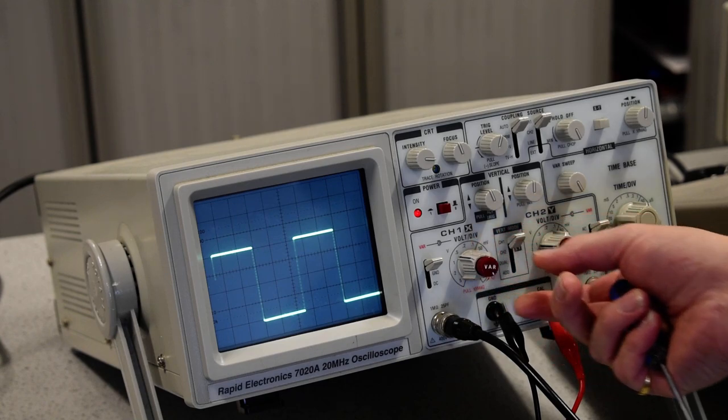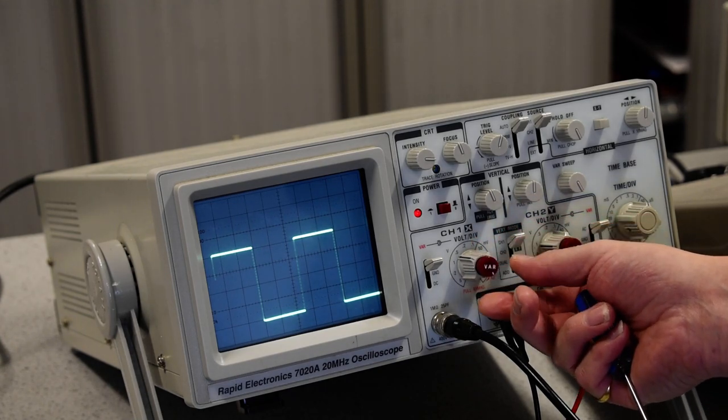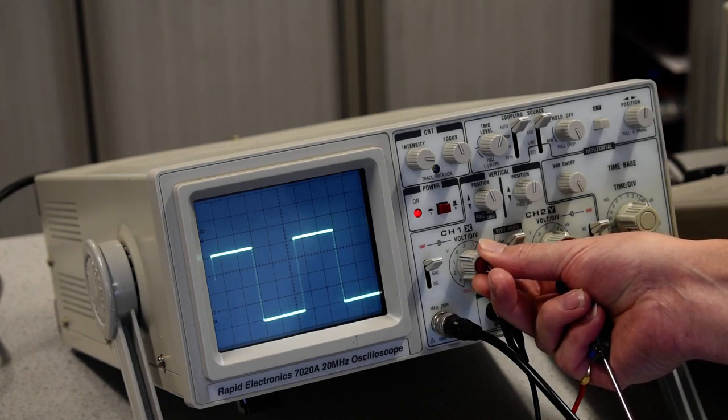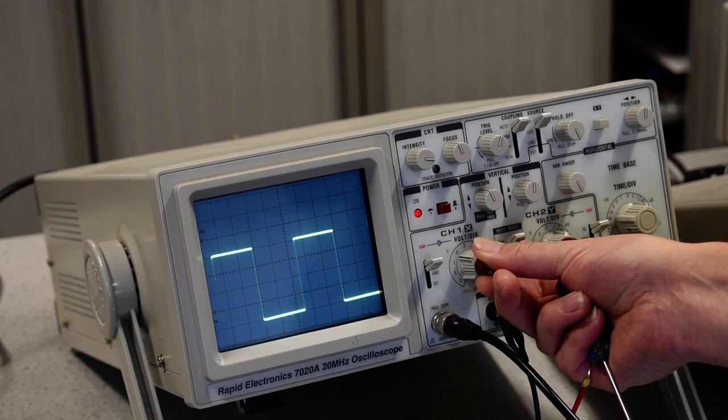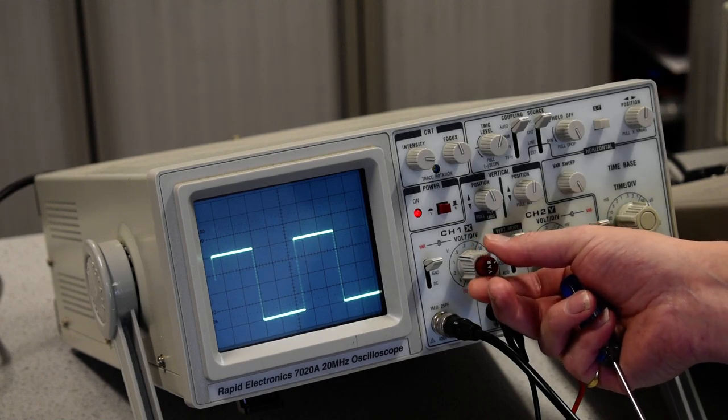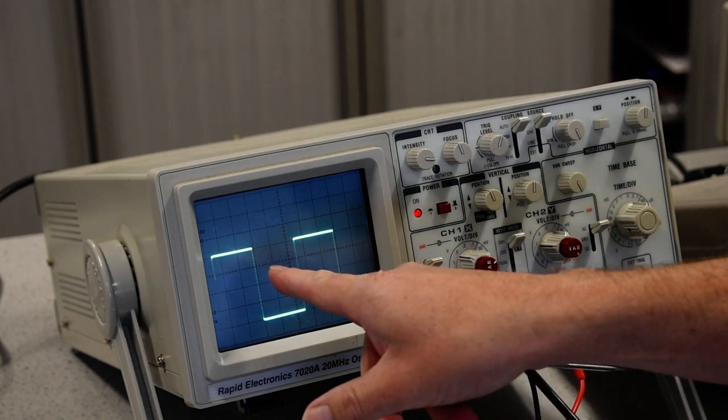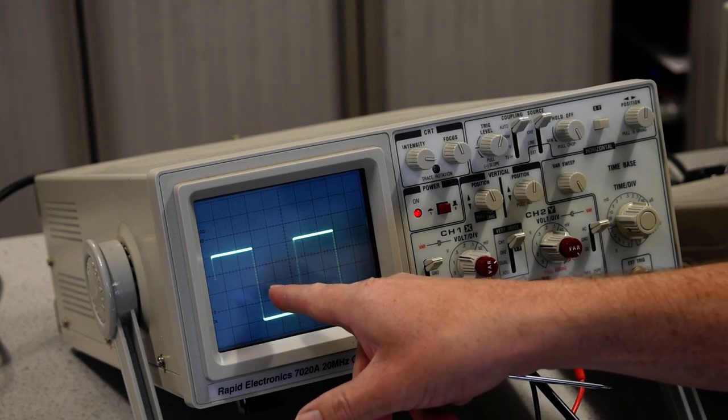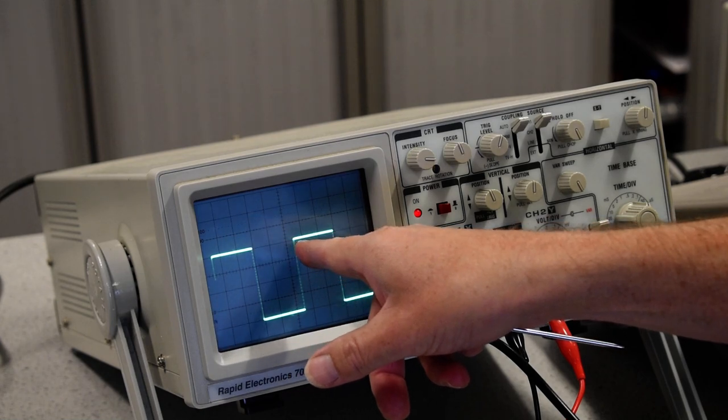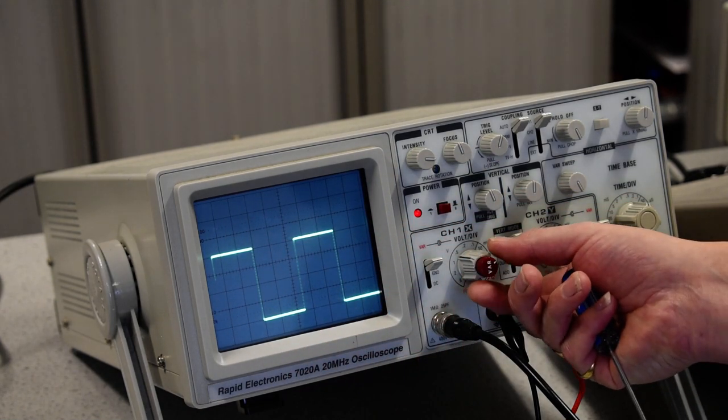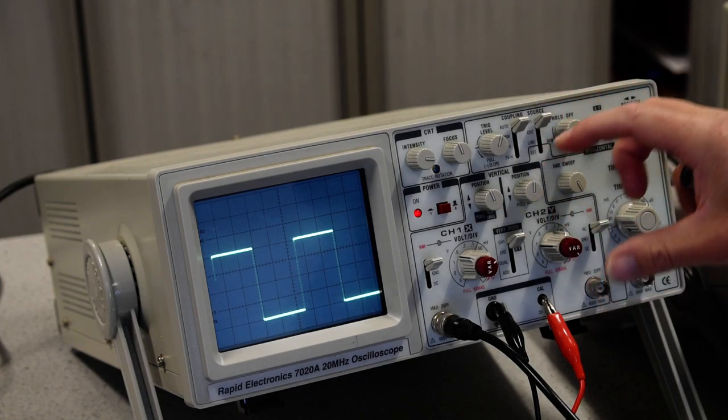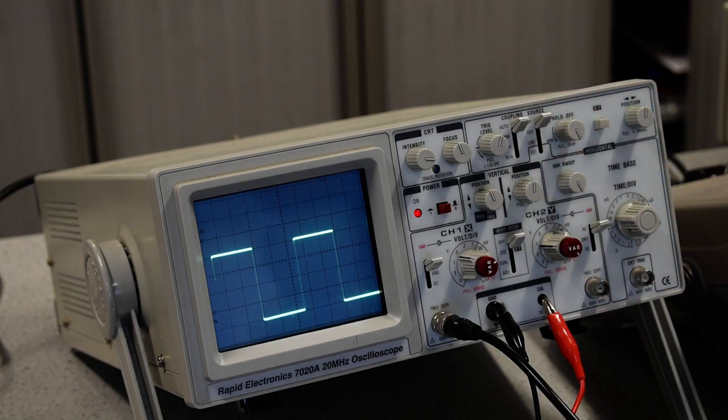So we're on 0.5 volts per division. We can use the VAR dial to tweak the screen such that we've now got accurately 0.5, 1, 1.5, and right on that grid line 2.0. And we just leave that VAR setting there now because we have properly calibrated the oscilloscope.